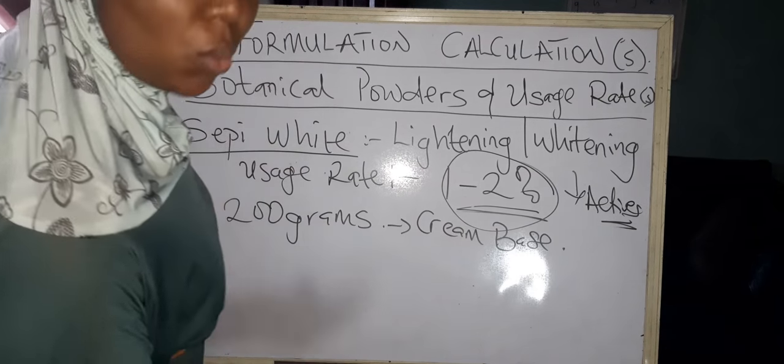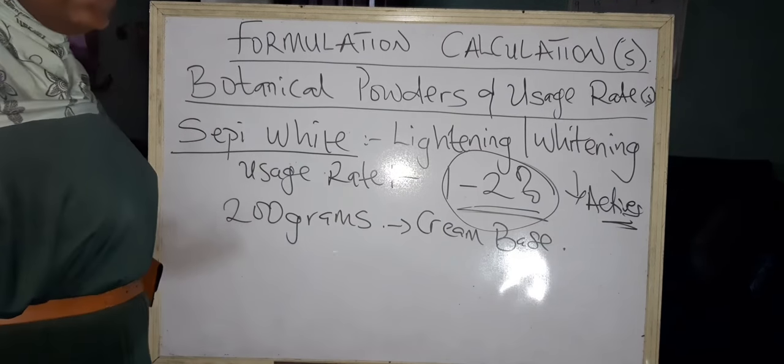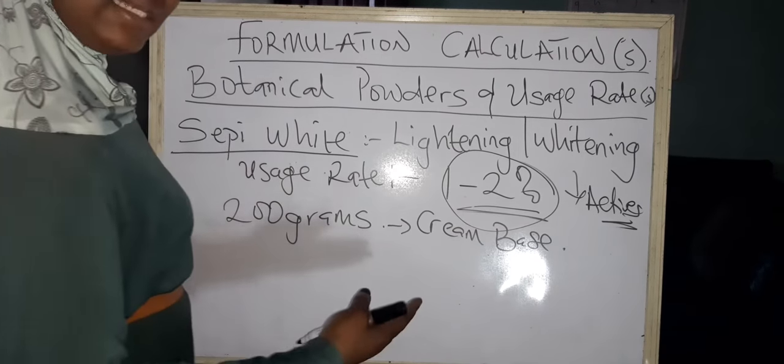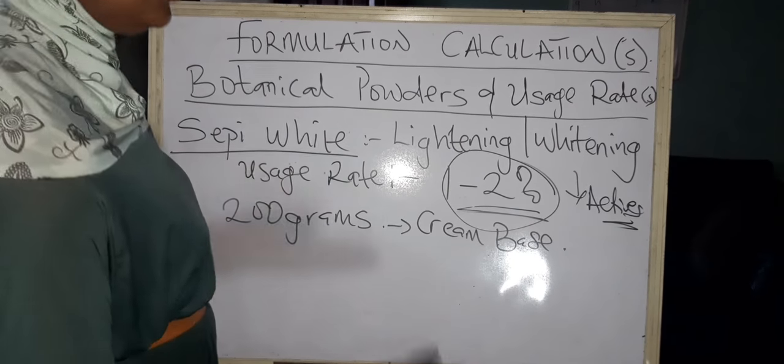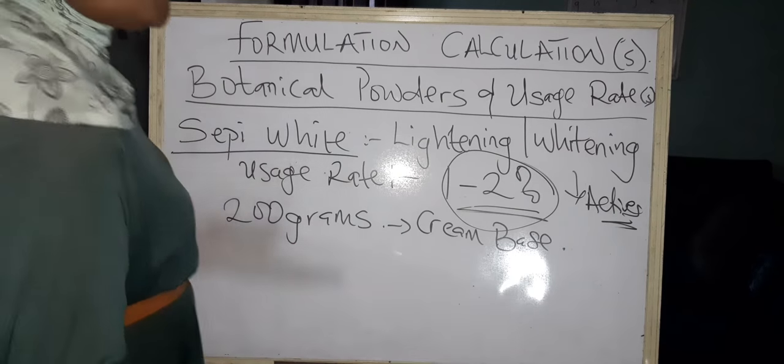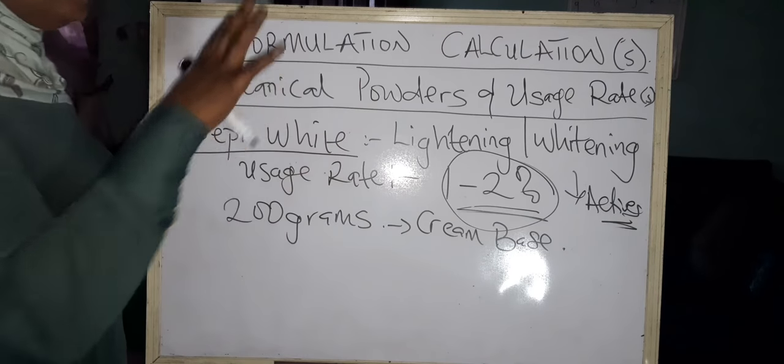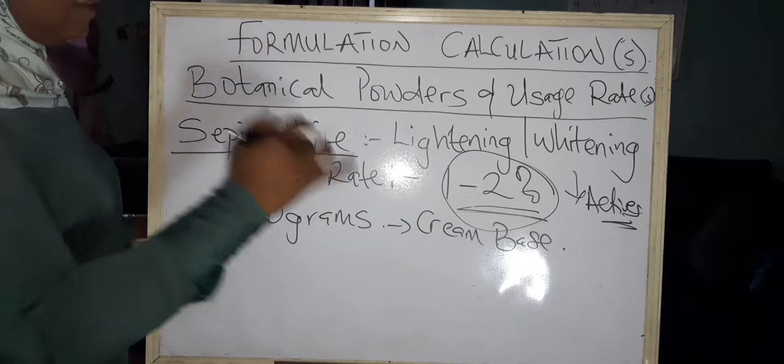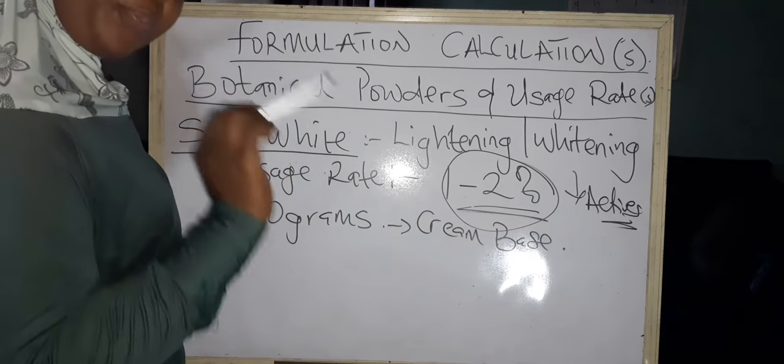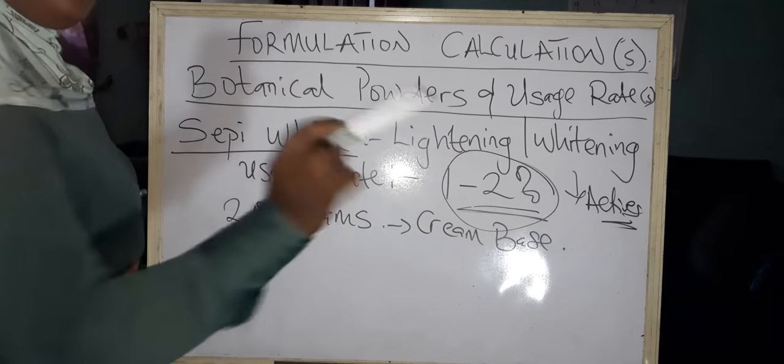When you put a very good active like vitamin B3 niacinamide, which prefers working in a neutral environment, in an extremely alkaline condition, it won't function properly. If put in an extremely acidic condition, it also won't function rightly. Not only usage rates are important - knowing the pH level of these botanical powders is very important. When you finish mixing your products, you need to balance pH, whatever botanical powder you choose to use. Balance the pH first.